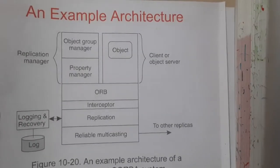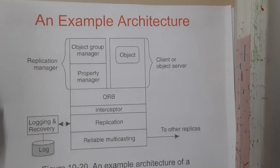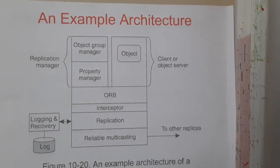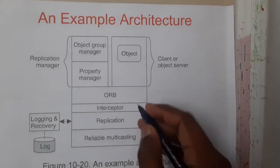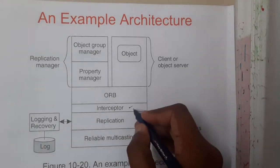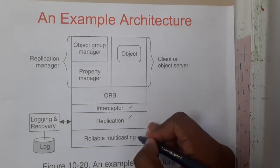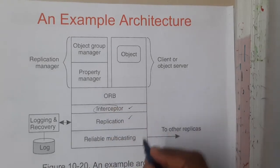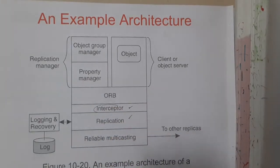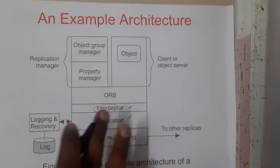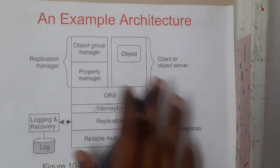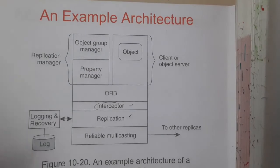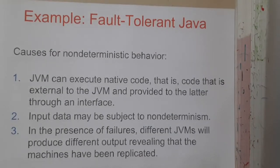This is the architecture for CORBA — you can draw it and explain it. We already know about interceptors and replications. Interceptors are discussed in the fourth unit, if you are watching unit by unit, check there. So this is just the architecture diagram.